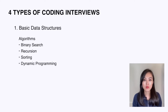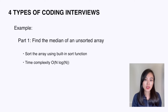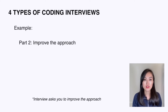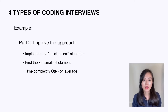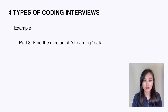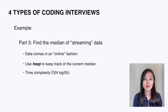During the interview, multiple questions will be asked ranging from simple to hard. For example, the first part might ask you to find the median of an unsorted array using any method — you can use a built-in sorting function and return the median after sorting. The interviewer may then ask you to implement the sorting algorithm yourself, where you could use QuickSelect to find the k-th smallest element. Finally, the question might become a streaming version where data comes in online — in that case you might need to use heaps.